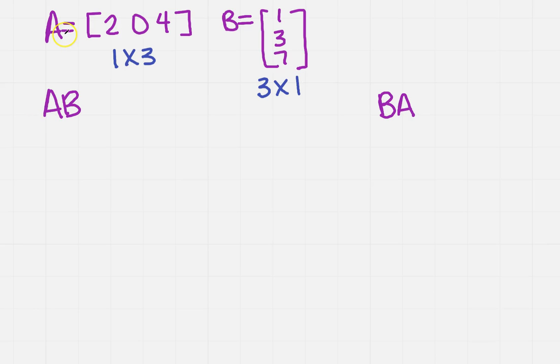For the first one, if I want to do A times B, I have a 1 by 3 times a 3 by 1, which means my answer is going to be a 1 by 1. It's really important that you know the sizes of your matrix.